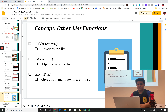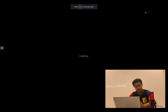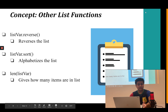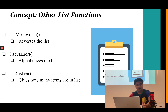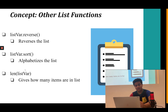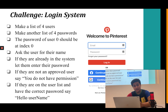Other list functions: list_variable.reverse() reverses a list; list_variable.sort() alphabetizes it in alphabetical order; and len(list_variable) returns how many items are in the list.